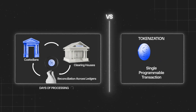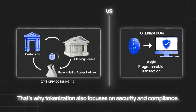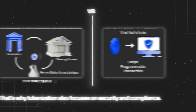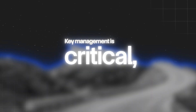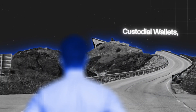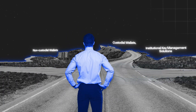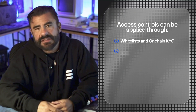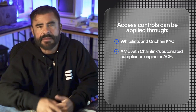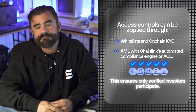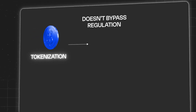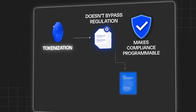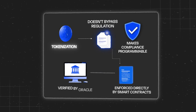Of course, speed is nothing without trust. That's why tokenization also focuses on security and compliance. Key management is critical: deciding between custodial wallets, non-custodial wallets, or institutional key management solutions. Access controls can be applied through whitelists and on-chain KYC and AML with Chainlink's Automated Compliance Engine, or ACE. The important point is that tokenization doesn't bypass regulation — it makes compliance programmable, enforced directly by smart contracts, and verified by oracles.